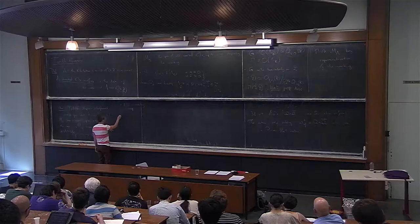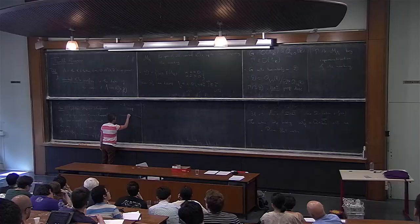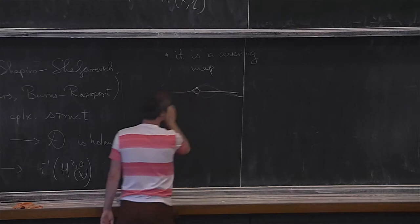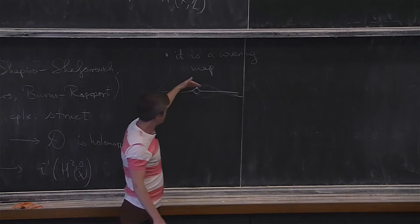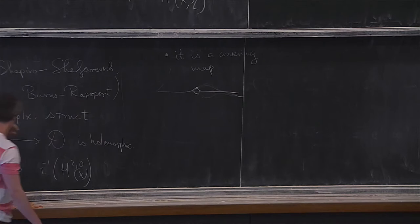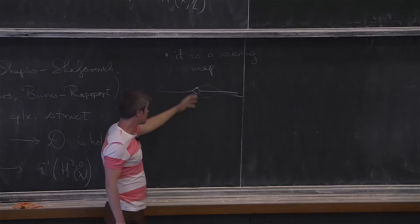Perhaps you are familiar with the double line — the real line where at the origin you have two points, with a chart near each point covering a neighborhood; it's a manifold, just not Hausdorff. That map goes to the real line and is a covering map. This is roughly what is happening here. The map is also surjective, meaning that for any valid Hodge decomposition you prescribe, there will be a K3 surface which realizes it.